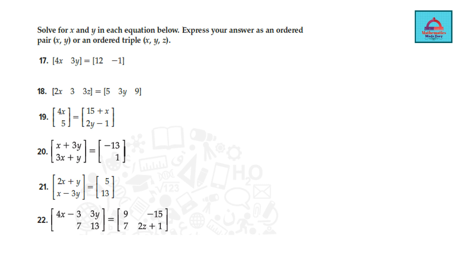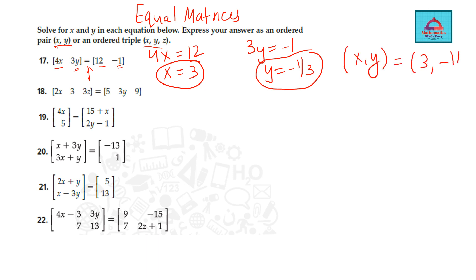For question 17 to 22, you have to find the ordered triple x, y or x, y, z. Here you are going to use the concept of equal matrices. If two matrices are equal, the element at the same position, 4x will be equal to 12. So your x is 3 here. 3y equal to negative 1. So your y is negative 1 over 3. The solution is x comma y is 3 comma minus 1 by 3.